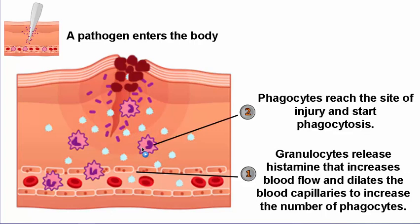The second step is when the phagocytes come to the tissue or wound, they start to engulf the pathogens — a process called phagocytosis, which I will explain later. These phagocytes will actually eat and swallow the pathogens.